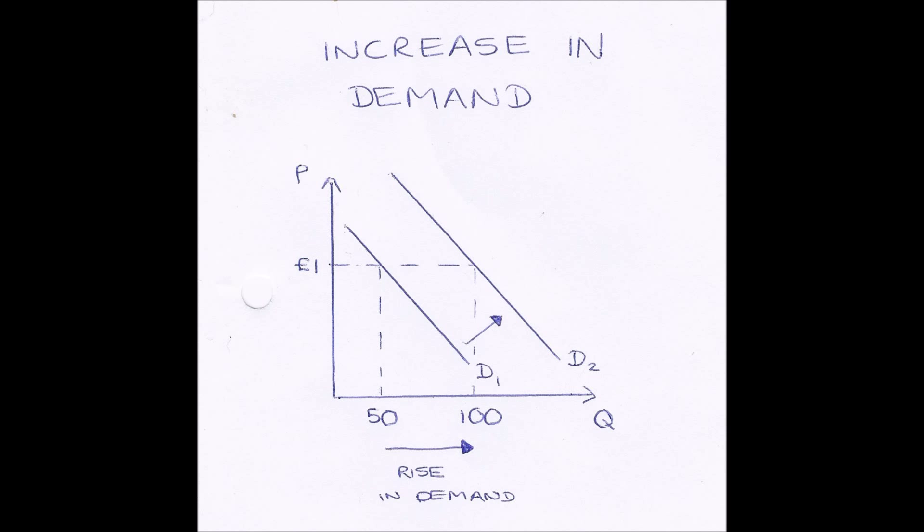And if demand increases, our curve shifts to the right, shown here from D1 to D2. And this works like so. So if our price is £1 and the price of our good always stays at £1, if we read across to D1, our original demand curve, our quantity demanded, if we read down, is 50 units.